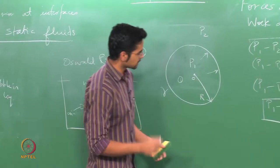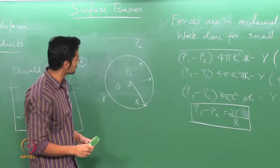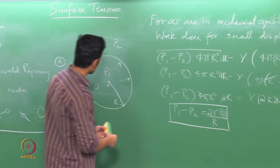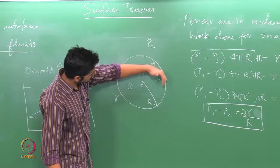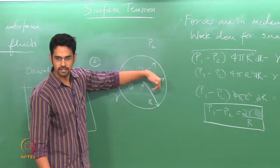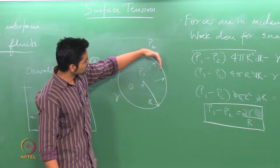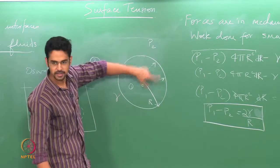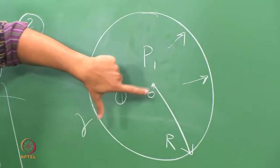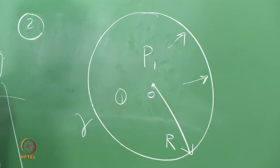The important thing to note is that the pressure inside the bubble is larger. Any curved surface will have some surface tension force acting on it. The pressure on the inside of a curved surface — the side where the centre of curvature lies — will be higher, whereas on the other side the pressure will be lower. Let us store this result for a sphere and then look at another case to generalise to a more general expression for the interfacial force.